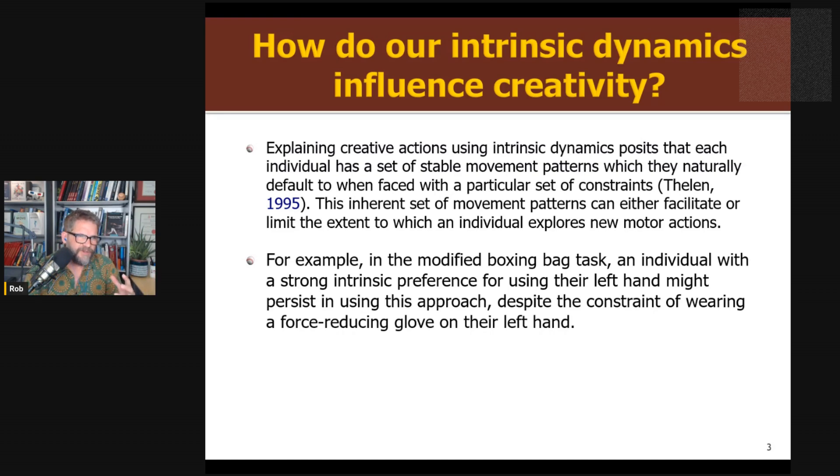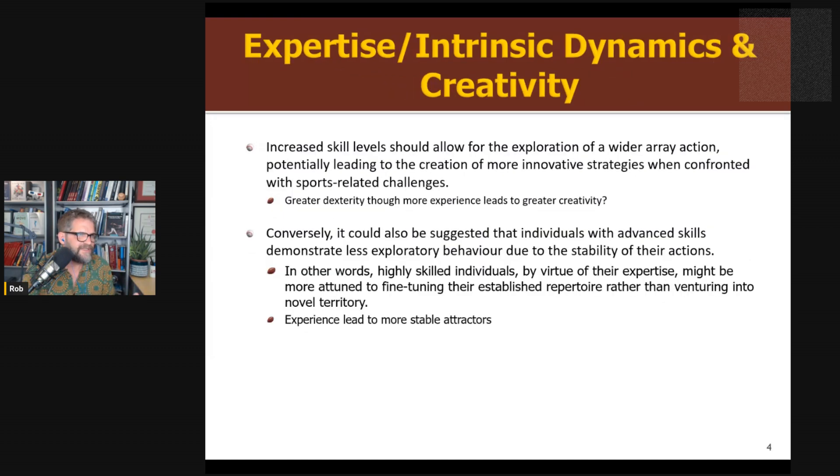So for example, if you've learned a task of punching with your left hand with a lot of practice, if I add a constraint that slows down, maybe I put a strap around your arm that makes it so you can't punch as hard with your left hand, maybe that tendency, that stability of that solution is going to interfere with you trying something else, like your right hand. So maybe these intrinsic dynamics, the stability we've developed, is going to hinder creativity.